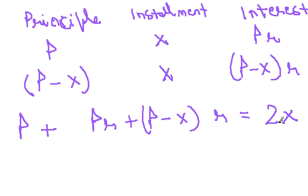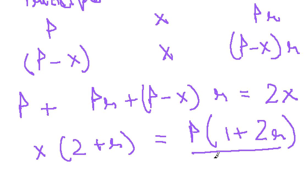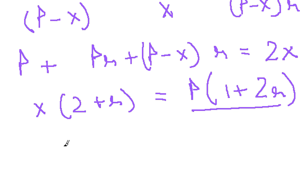So if you bring x on one side, we have x times (2 + r) is equal to P times (1 + 2r).